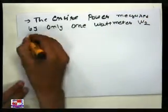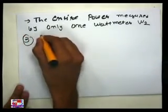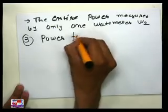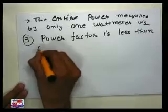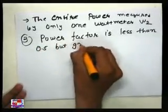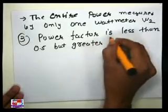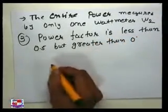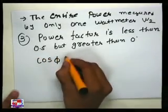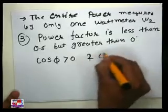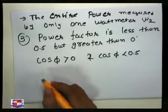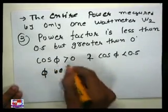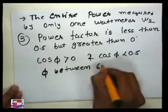Our third case: power factor is less than 0.5 but greater than 0. So cos φ is greater than 0 but less than 0.5. In this case, φ will be between 60° and 90°.